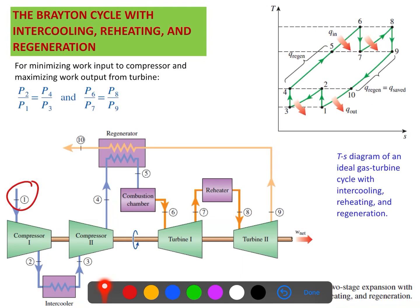For the first part — intercooling, reheating, and regeneration — you must understand this. The gas enters into the compressor at state one. From state one to two, there is isentropic compression. Isentropic means no change in entropy. On the T-S diagram, temperature is on the vertical axis and entropy on the horizontal. From state one to state two, entropy is constant, so s1 equals s2.